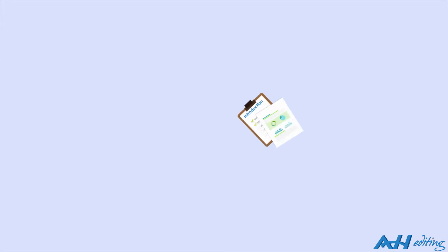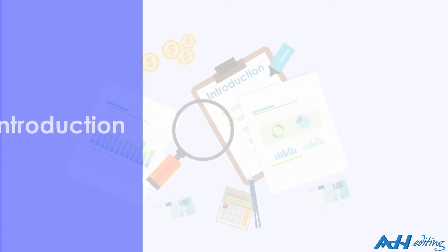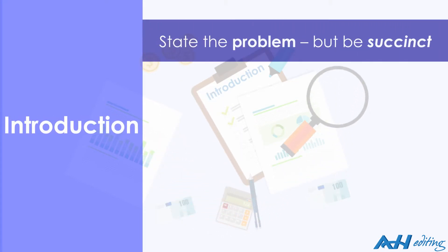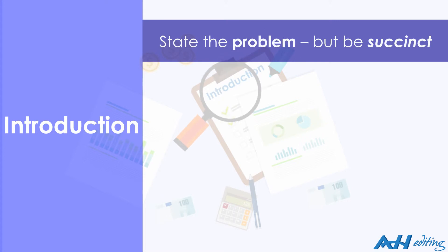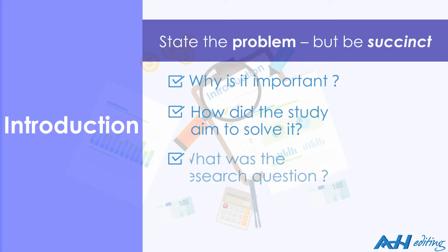Now let's look at each of those sections individually. Let's start with the introduction. You need to state the problem addressed by your study, but briefly — three sentences at most is good. Tell the reader why it is important, how the study aims to solve the problem, and what the research question was.